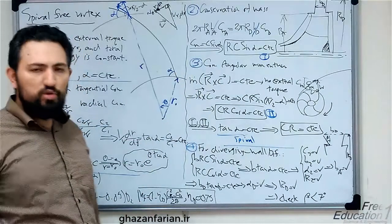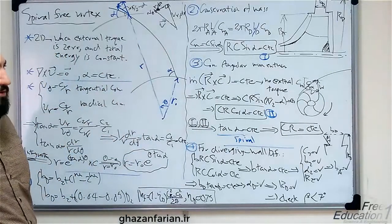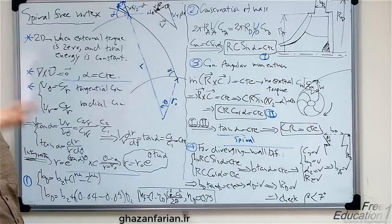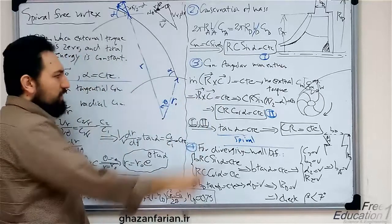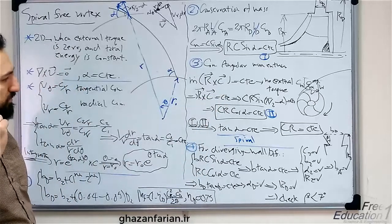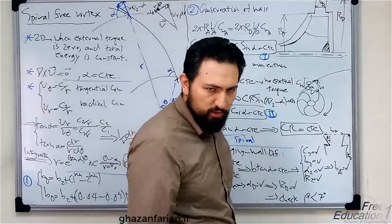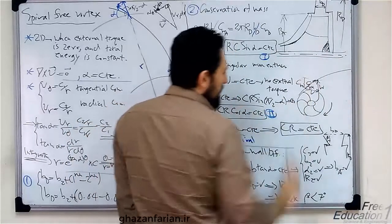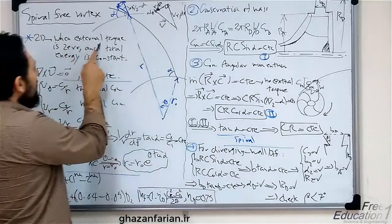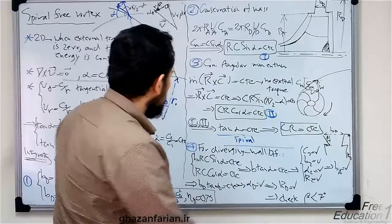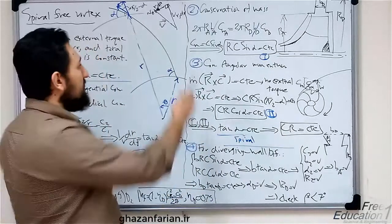Let's write the conservation of angular momentum. There is no external source of torque and also no dissipation of energy or angular momentum due to viscous effects, so the angular momentum of the fluid should remain constant. A fluid particle leaving the impeller travels along a direction with angle alpha based on the velocity triangle with velocity C, and it should travel along a spiral free vortex because there is no external torque and no effect of viscosity. That is the mass flow rate, which is constant based on the conservation of mass.